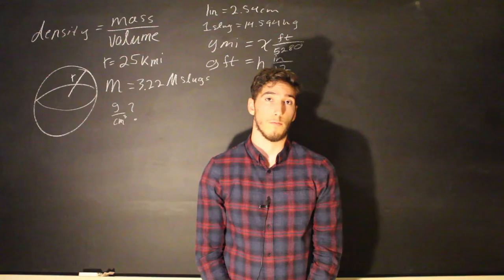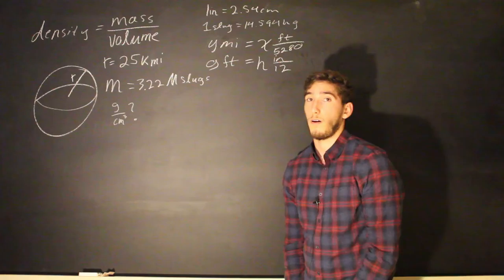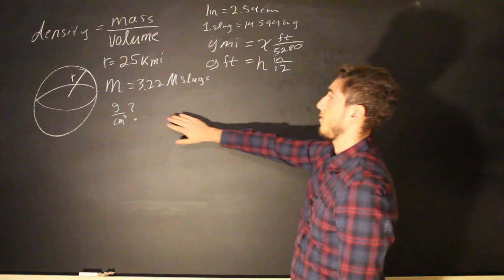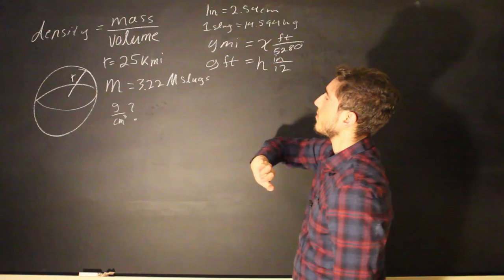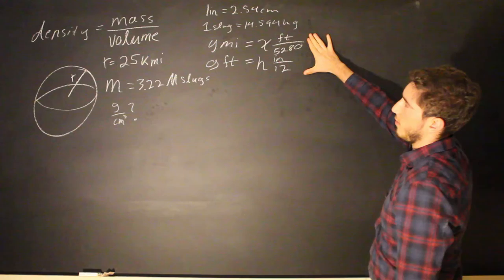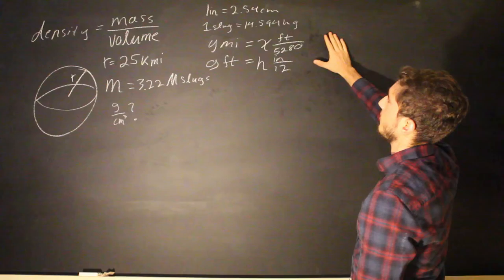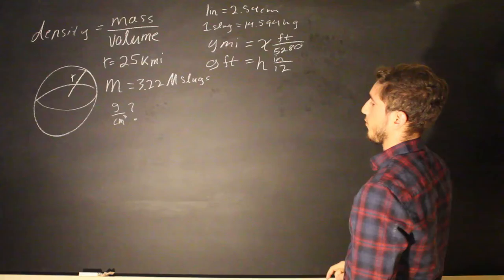So the first thing you want to do with any physics problem is analyze the problem. As you can see, it's asking for the density in grams over centimeters cubed. We have our radius in miles, and we have our mass in slugs. Here we have our conversions, and I have two new conversions that were not in the last video, which is y miles equals x feet over 5,280, and g feet equals h inches over 12.